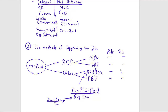Advantages of ARR: it calculates a percentage that is easy to compare, and it considers the entire life of the project. Biggest disadvantage: it uses profit, not cash flows. For payback period, advantages include simplicity — anyone can understand it. Disadvantages: it ignores cash flows after payback is complete, so the entire project life is not considered, and present values are not considered.